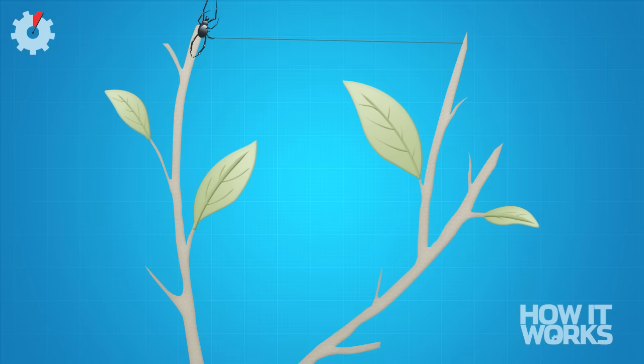First the spider dangles a length of sticky silk which can be carried in the air until it sticks to an anchor point. Now the spider fixes the second strand to the first point and spins this while crossing the bridge.